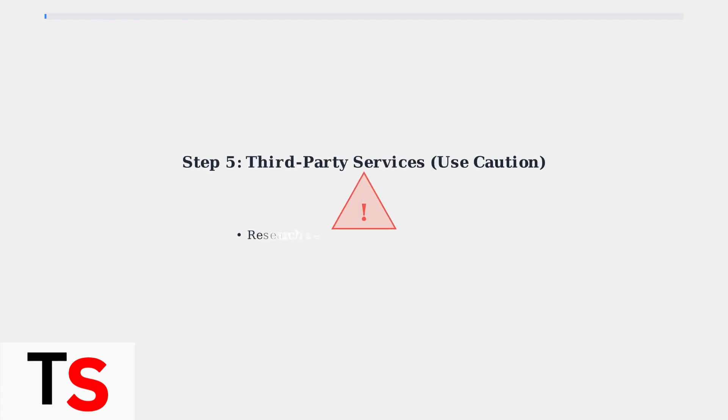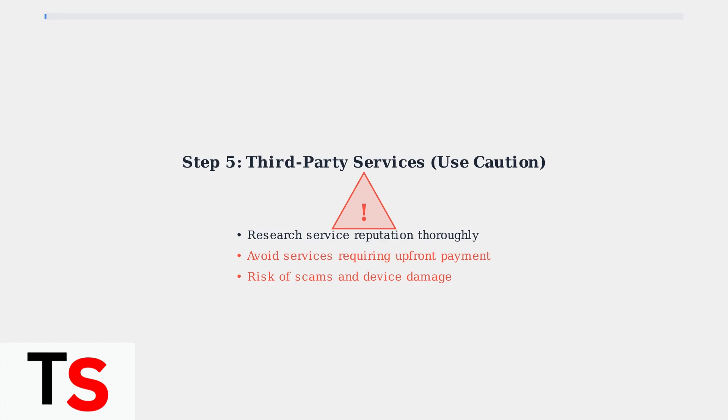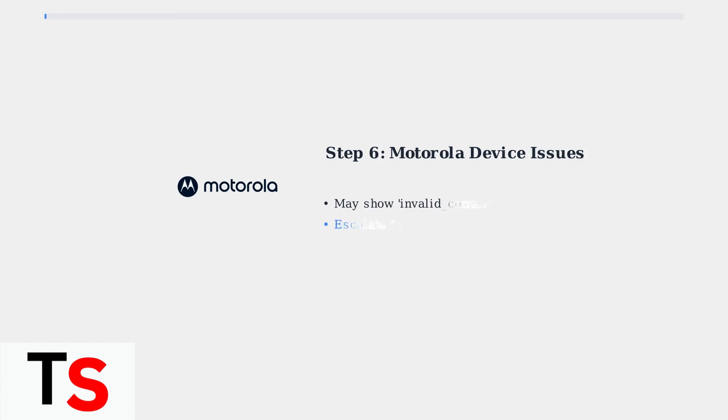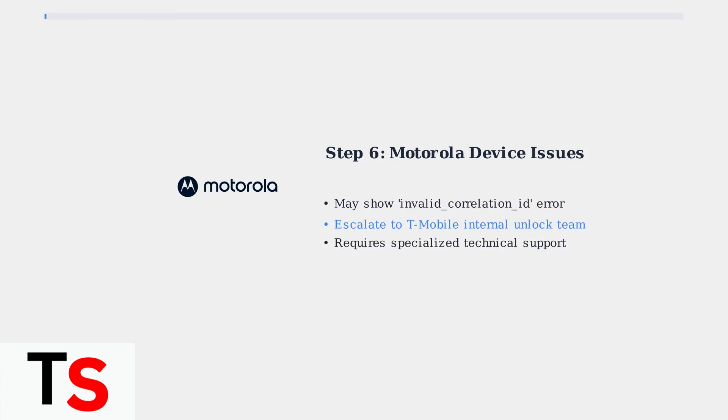If official methods fail, third-party unlocking services exist, but proceed with extreme caution. Research thoroughly and only use reputable services to avoid scams and potential device damage. Motorola devices may encounter specific issues like invalid correlation ID errors even after T-Mobile approves the unlock. In these cases, escalate the issue to T-Mobile's internal unlock team for specialized assistance.